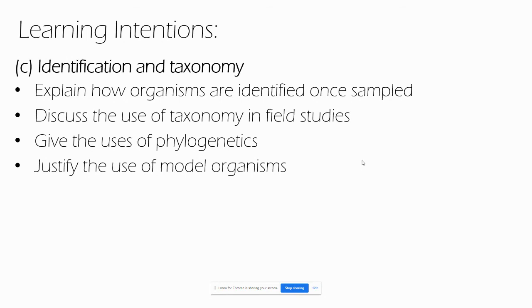Model organisms are ones which are easily studied or have been well studied. These include the bacterium E. coli, the flowering plant Arabidopsis thaliana, the nematode C. elegans, the arthropod Drosophila melanogaster (fruit fly), and the chordates mice, rats, and zebrafish. These have been very important in the advancement of modern biology, and information obtained from them can be applied to other species which are more difficult to study directly.